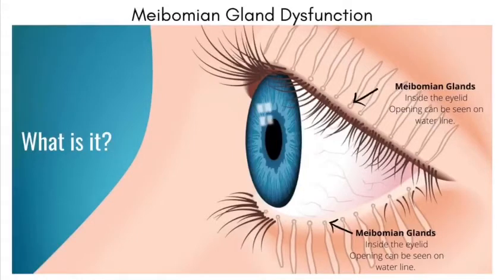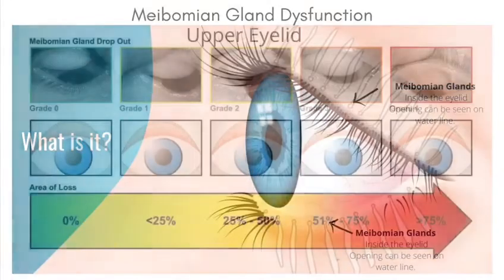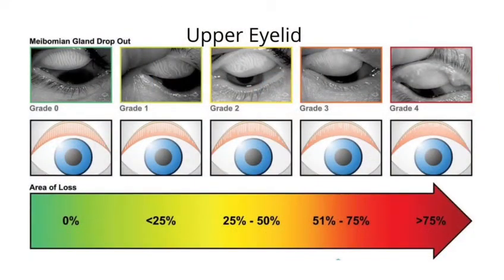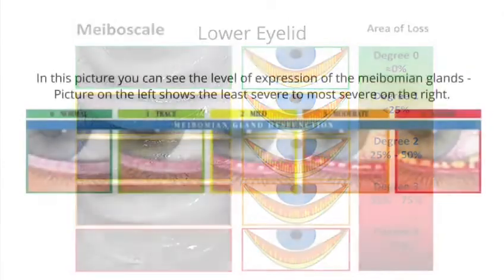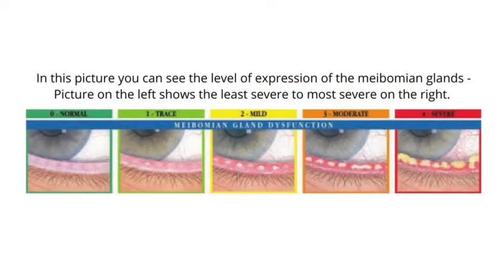The eyelids play a critical role in dry eye disease. The top and bottom lids are lined with the meibomian oil glands, which produce the oily part of your tears. These oils are crucial for preventing your tears from evaporating too quickly. Meibomian gland dysfunction, or MGD, occurs when these glands become blocked and do not secrete good quality oil into your tear film.